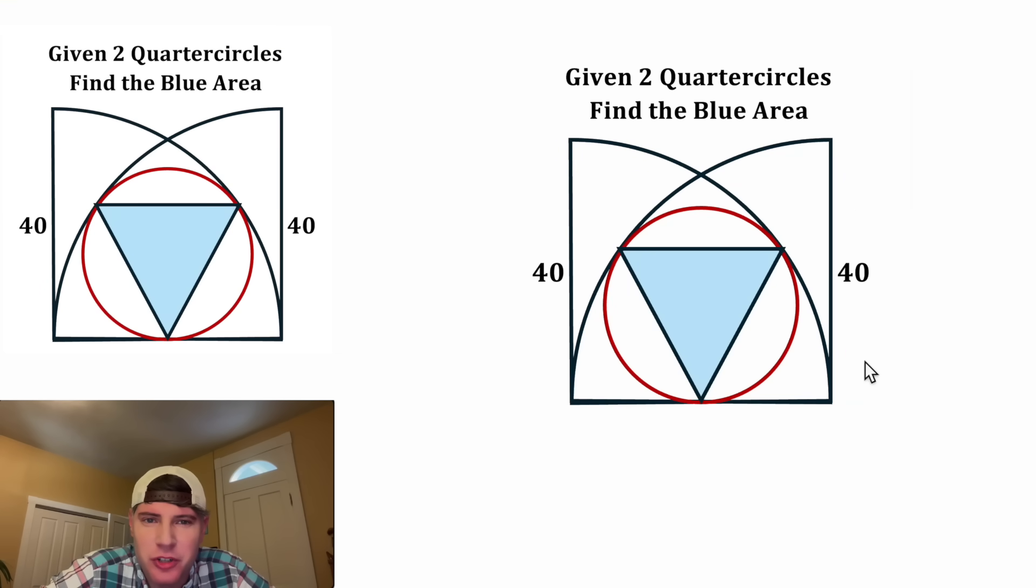We're given two quarter circles, each with a radius of 40. A circle that's inscribed inside of here so that these are tangent, these are tangent, and these are tangent. And it wants us to find the area of this blue triangle.